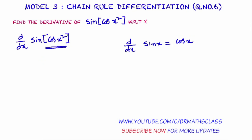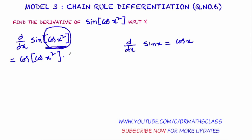Now observe this question — consider cos x squared as x. If you imagine cos x squared as x, it looks like sin x. What is the derivative of sin x? Derivative of sin x is cos x. So we write cos of — and in place of x we write cos x squared.